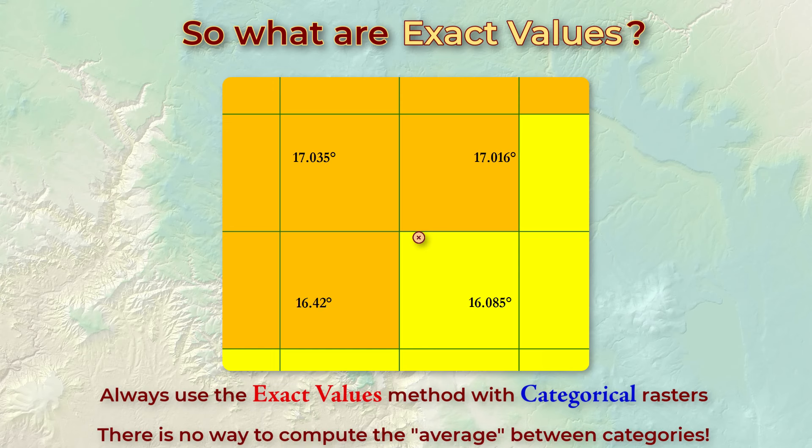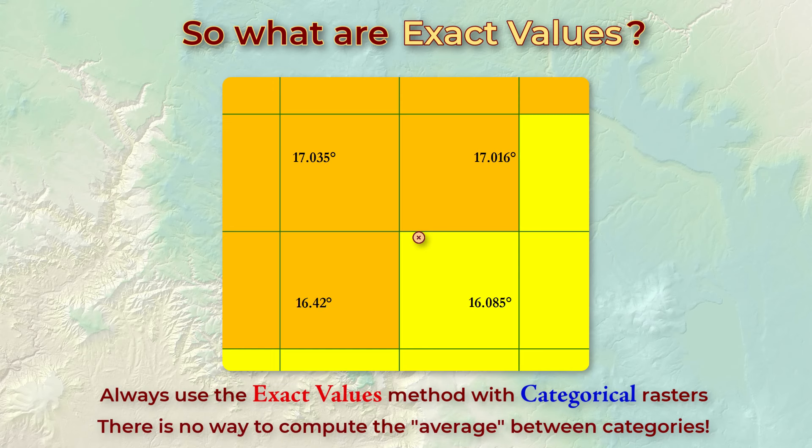For example, you should always choose exact values if your raster is a categorical raster. And consider this point. There is no way to calculate weighted averages of categories. Say you have a categorical raster of land cover types, and you have a point that is close to both ponderosa pine and water values.